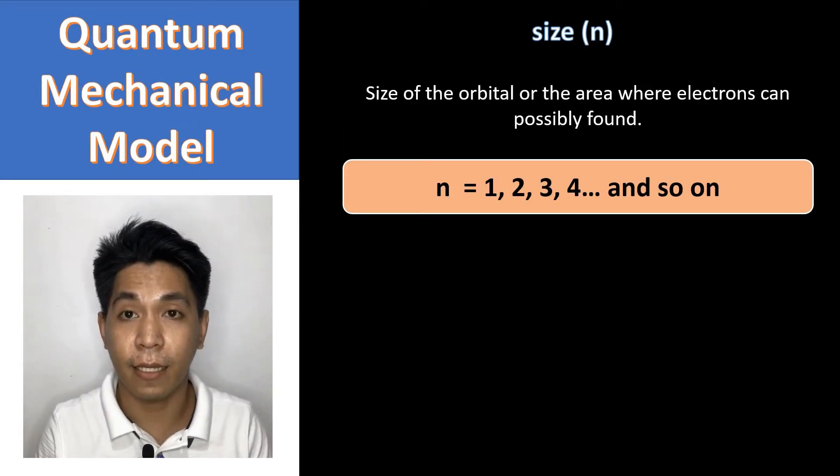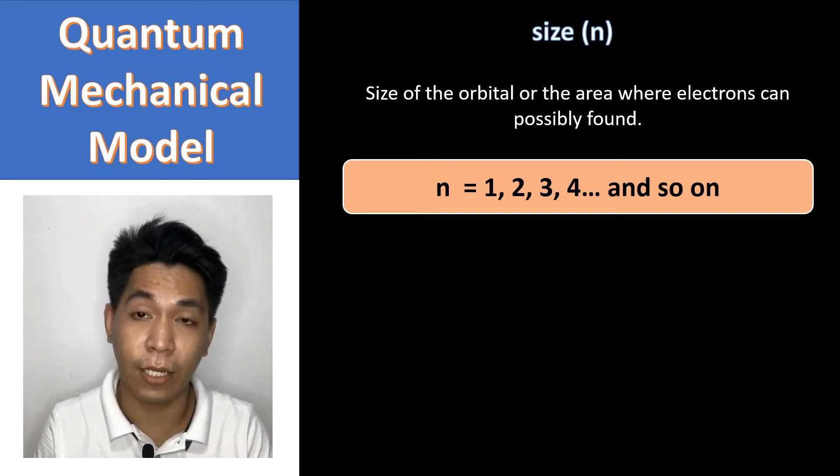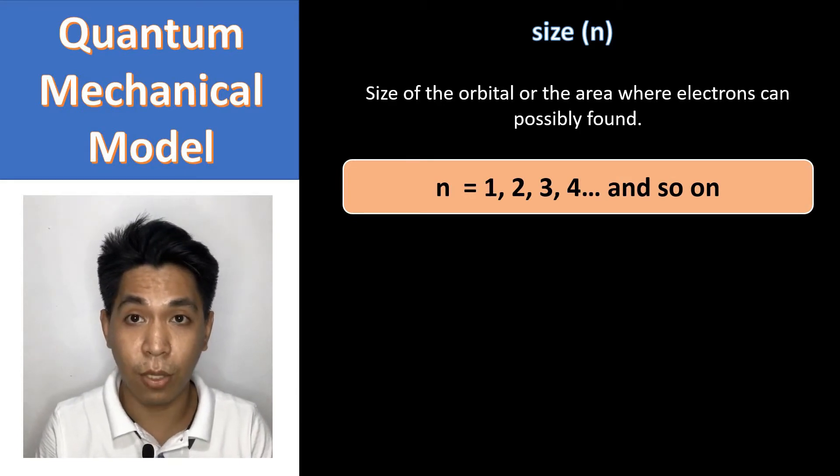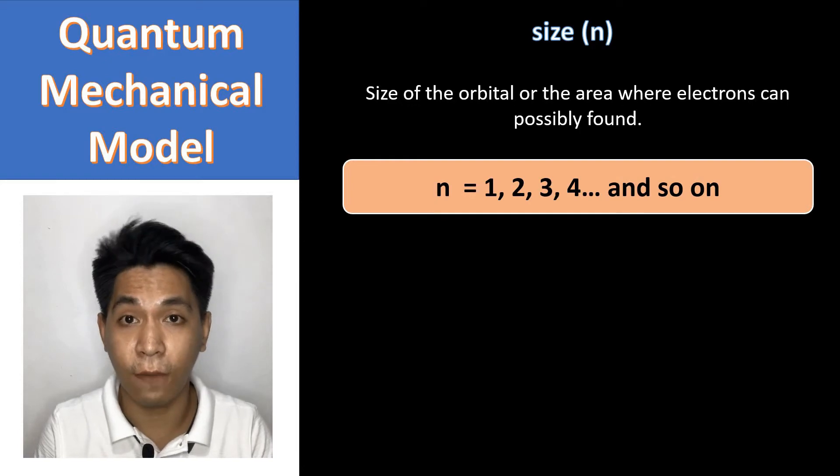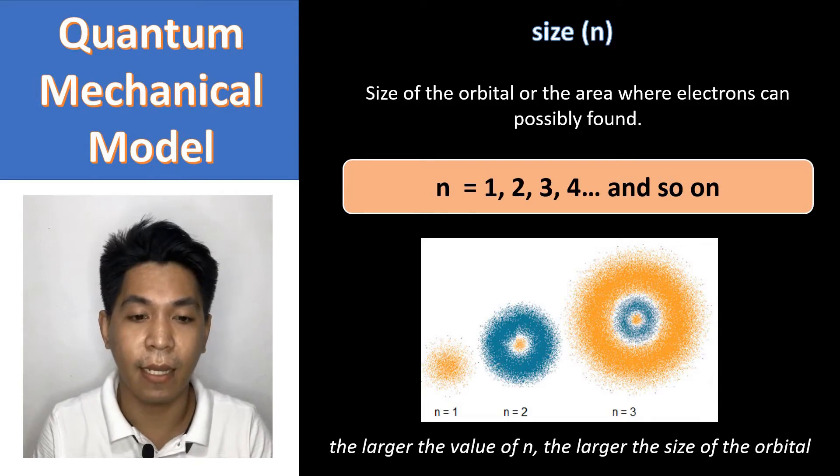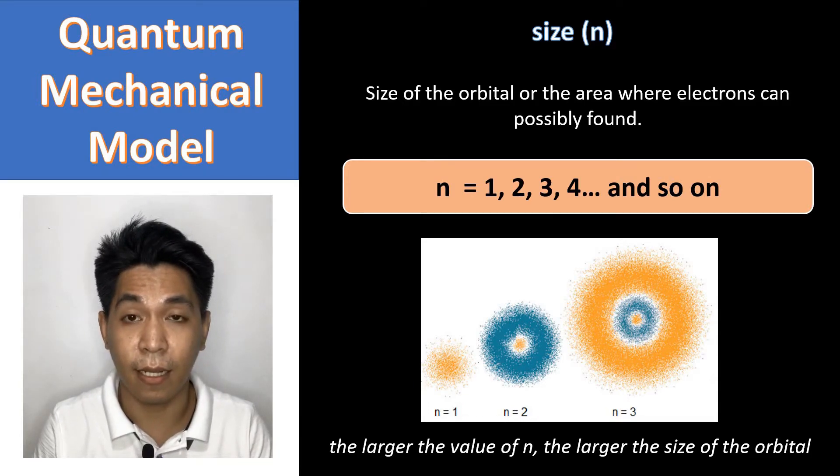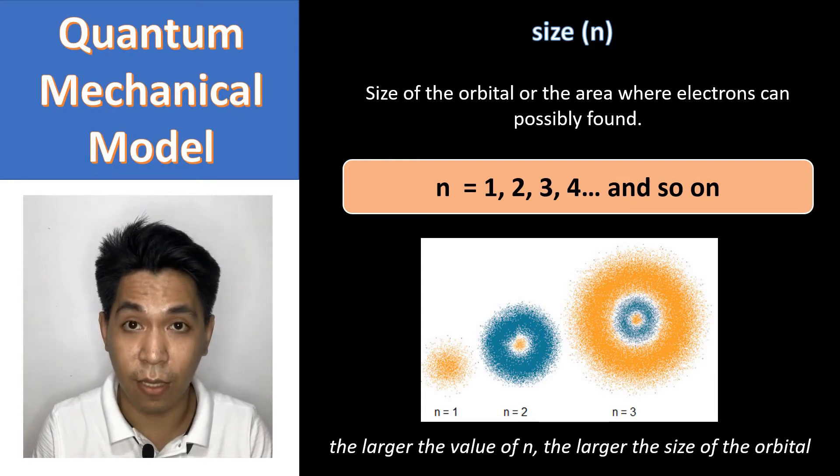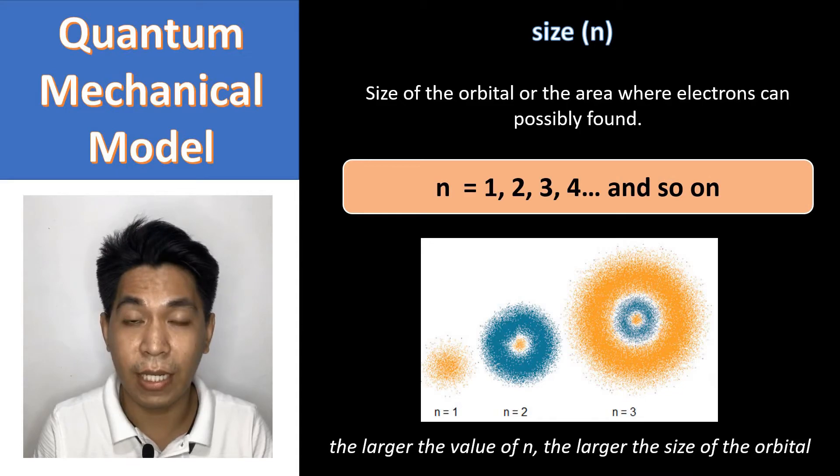The n tells us the size or how big the area for finding the electrons. We use the numbers 1, 2, 3, 4, and so on and so forth as long as it's a whole number to represent the n. The idea is, the larger the n, the larger the size of the orbital. The smaller the n, then the smaller the size for finding the electrons.